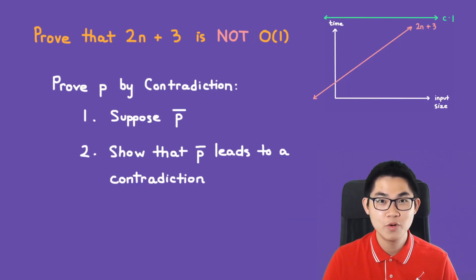We're going to use proof by contradiction. So let's say we want to prove a statement P. The first step is to negate it and suppose the opposite. And don't worry, I'll show you an example in a moment. But suppose not P and then show that not P leads to a contradiction.